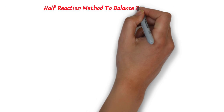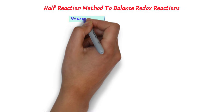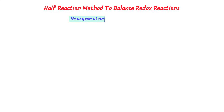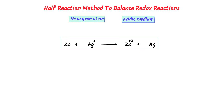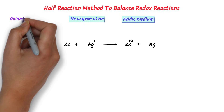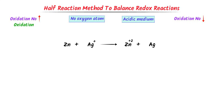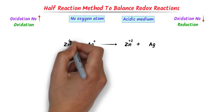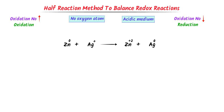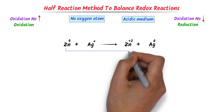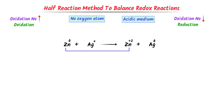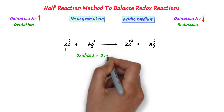Now I will teach you the half-reaction method to balance redox reactions when there is no oxygen atom. Remember that all these reactions occur in acidic medium. Consider this reaction — there is no oxygen atom present. Remember that when oxidation number increases, it is oxidation; when oxidation number decreases, it is reduction. The oxidation state of zinc in free state is 0, and that of silver is also 0. The oxidation state of zinc increases from 0 to positive 2; hence zinc is oxidized because it loses 2 electrons.